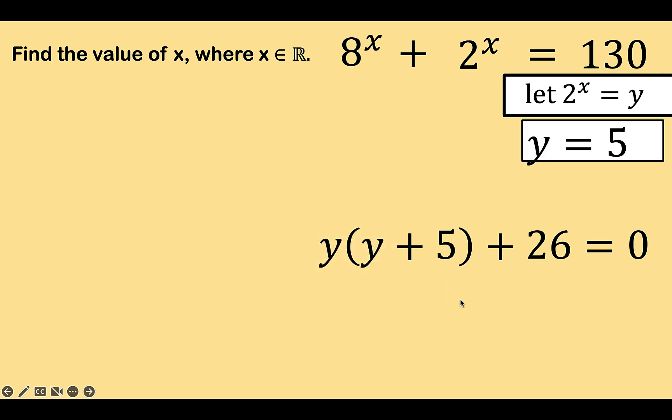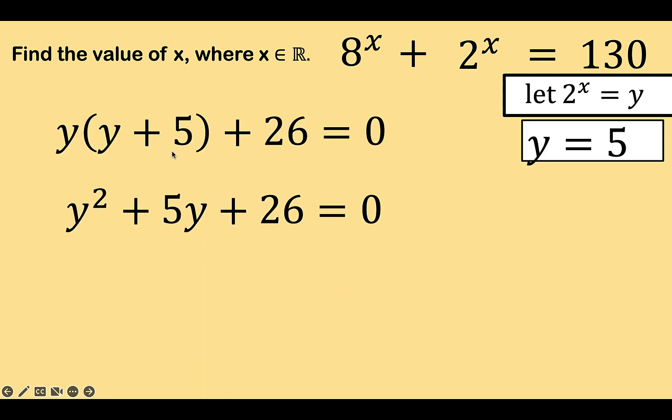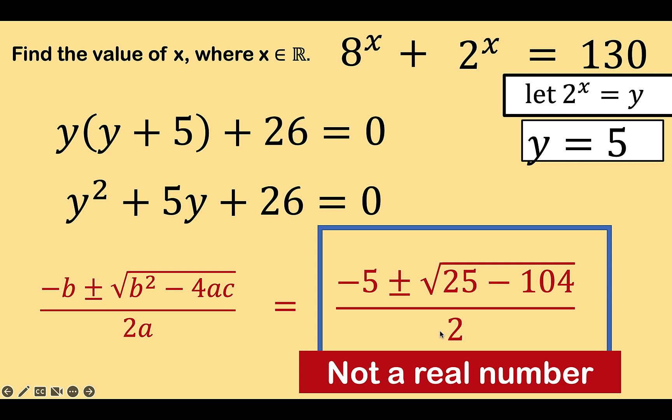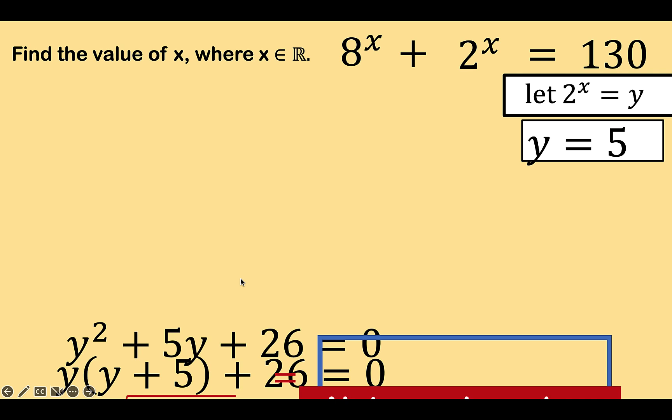Let's deal with the second equation. Let's distribute y to this binomial to arrive at y squared plus 5y. This is now a quadratic equation that we can solve using the quadratic formula. Substituting now 1 for a, 5 for b, and 26 for c, we arrive at this value. Notice that under this square root symbol, we have 25 minus 104, which is equal to a negative number, negative 79. That means this value is not a real number. But we require that x be an element of the set of real numbers. Therefore, since this is not a real number, the solution to this entire equation will not be a part of our solution.